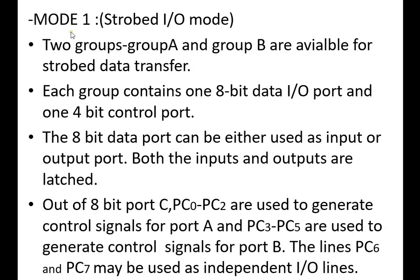Now Mode 1, the strobed mode. Two groups — Group A and Group B — are available. Each group contains an 8-bit data I/O port and a 4-bit control port. The 8-bit data ports can be used as either input or output, and both input and output are latched. PC0 to PC2 are used to generate control signals for Port B, and PC3 to PC5 generate control signals for Port A. The remaining Port C lines may be used as independent I/O lines.